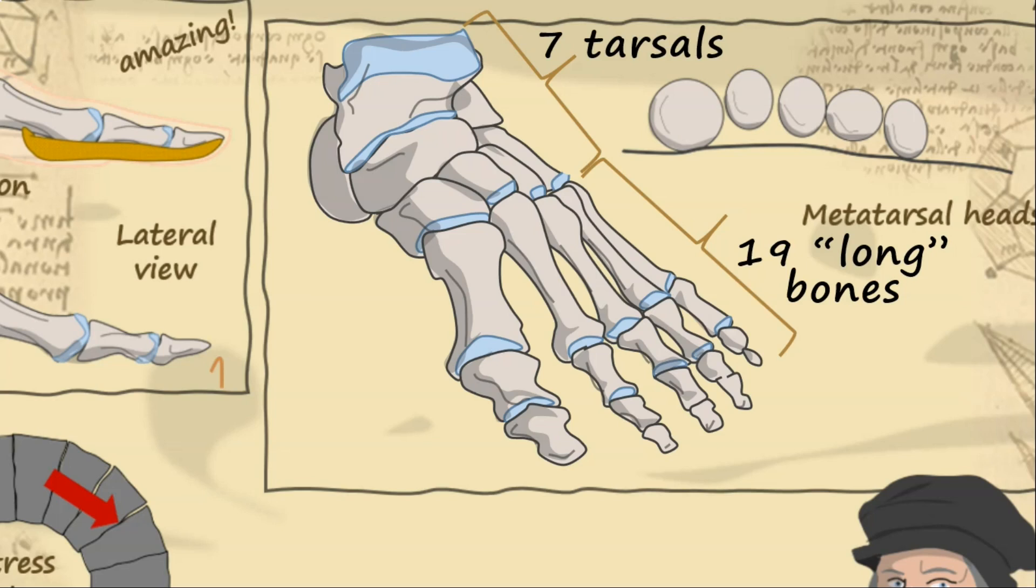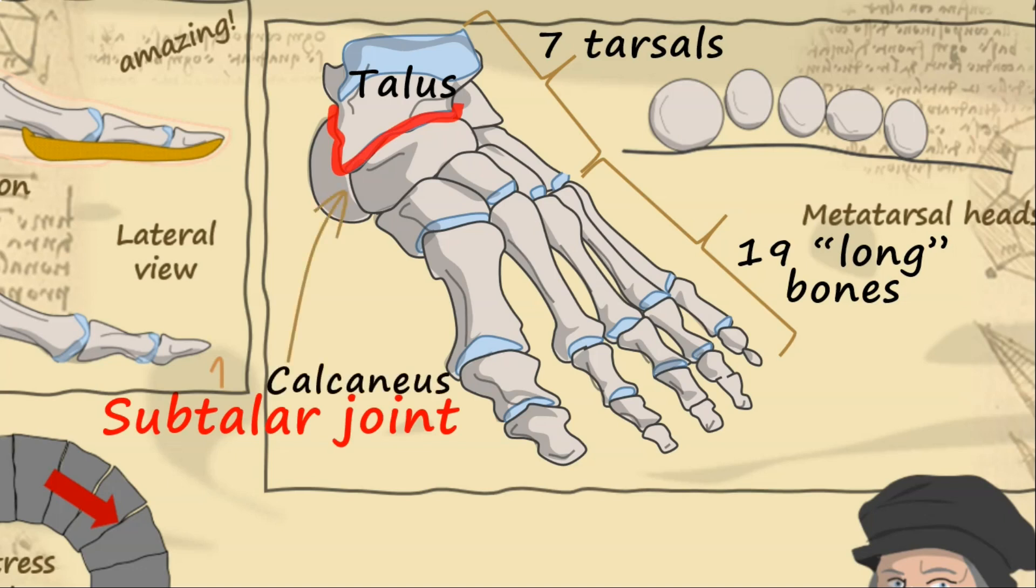The first of the tarsals is the talus, which is the only bony connection between your foot and leg. Directly below the talus tarsal is the subtalar joint, an articulation with the heel bone, or calcaneus, and the navicular tarsal, which is part of the midfoot.